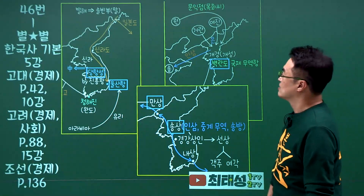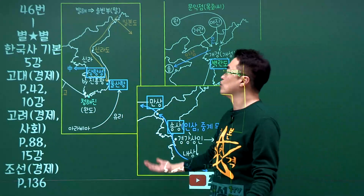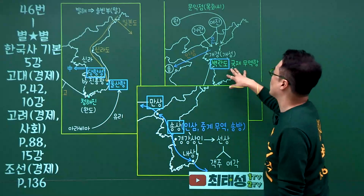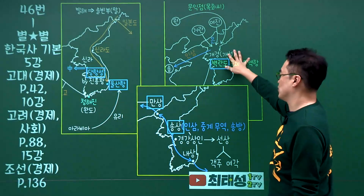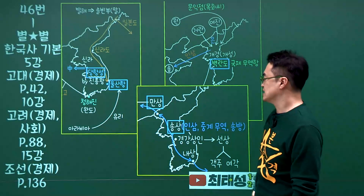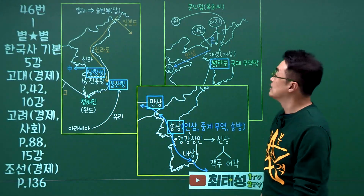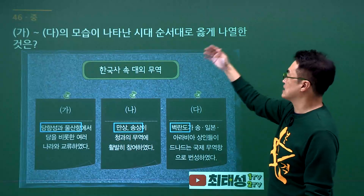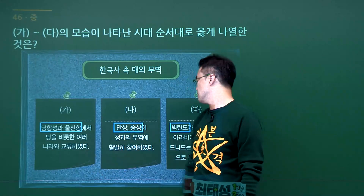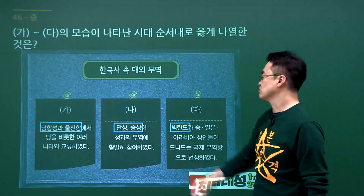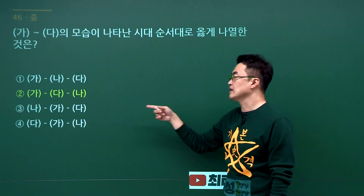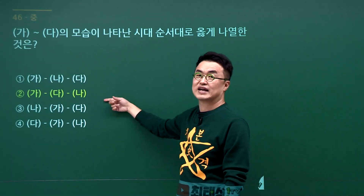역대 국제무역항 순서 문제입니다. 통일신라의 무역항은 울산항, 고려는 벽란도, 조선은 만상과 송상이 활동했습니다. 가다나의 시대 순서를 보면 당항성·울산항이 통일신라, 만상·송상이 조선, 벽란도가 고려이므로 순서는 가(통일신라), 다(조선), 나(고려)가 됩니다. 정답은 가·다·나로 2번입니다.